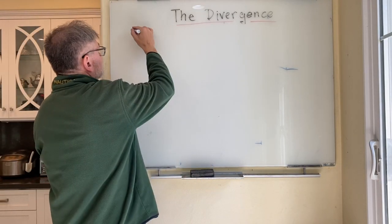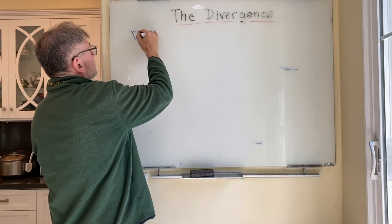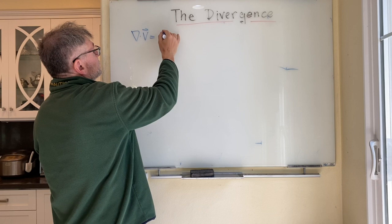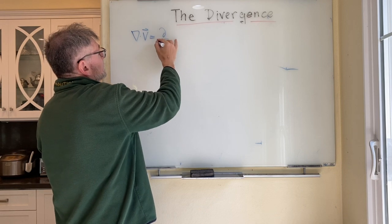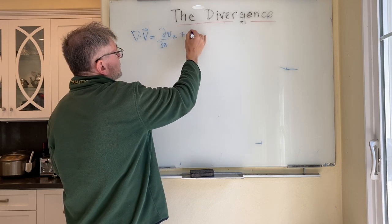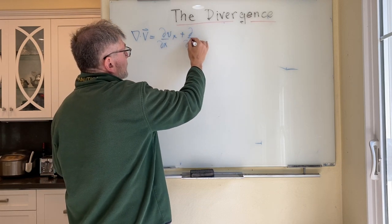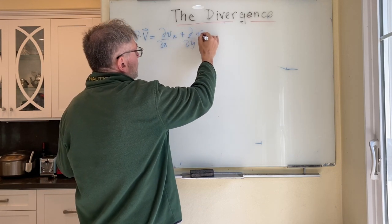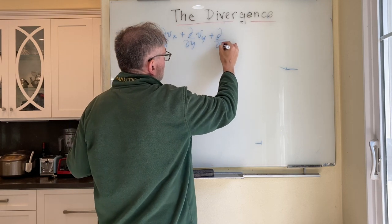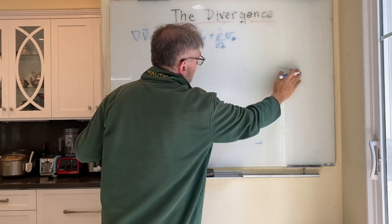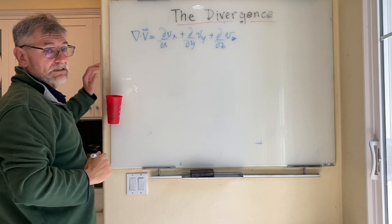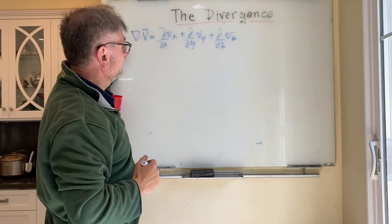The divergence in Cartesian coordinates is just d by dx of dx, plus d by dy of dy, plus d by dz of dz. But now if I want to do it in spherical coordinates, it's going to take a different form.